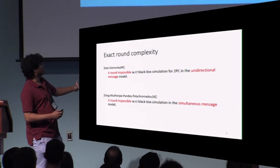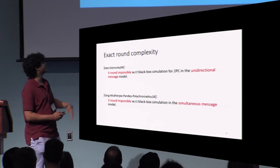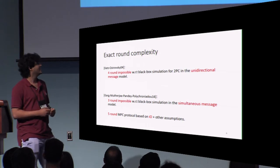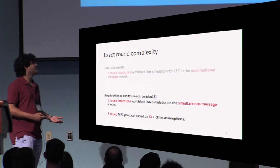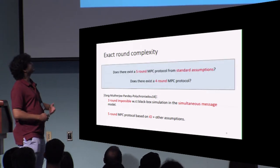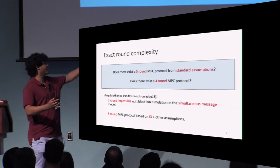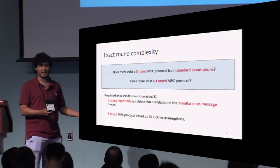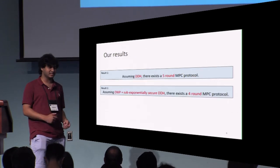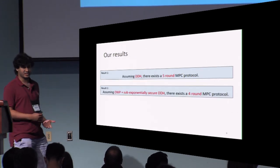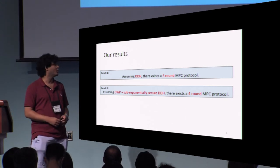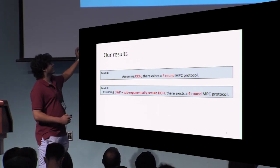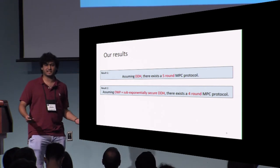Now we've got lower bounds. The same paper also showed a five-round protocol based on IO and some other assumptions. Given that this is the state of the art, the natural questions that follow are: does there exist a five-round protocol based on standard assumptions, and does there exist a four-round MPC protocol? The results in this talk show that assuming DDH we construct a five-round protocol, and assuming one-way permutations and sub-exponential DDH we construct a four-round protocol, which is optimal with respect to black-box simulation.